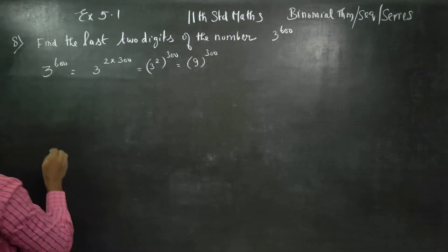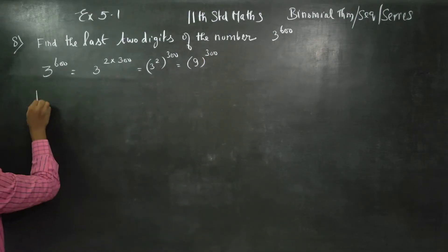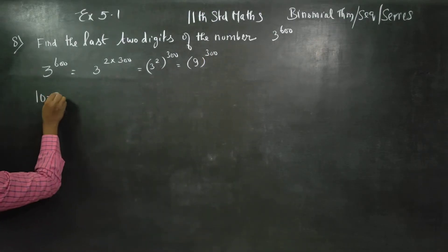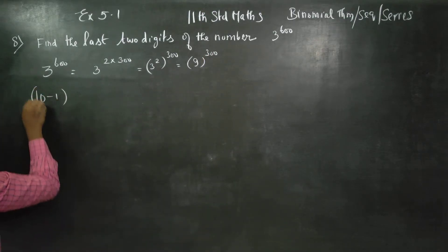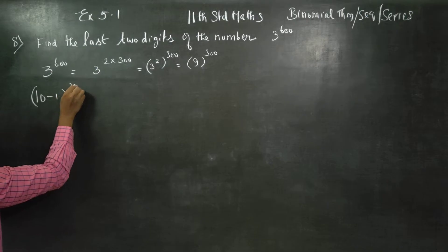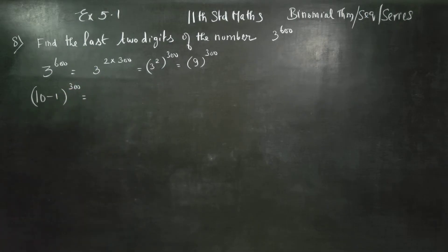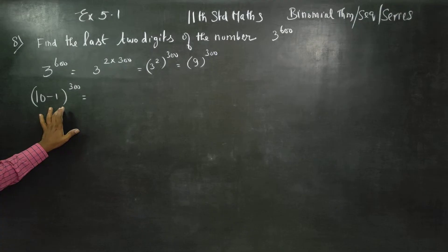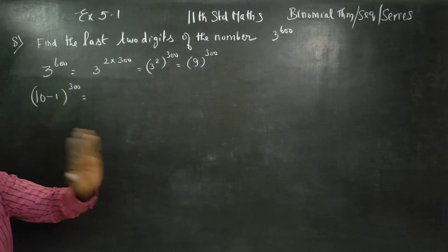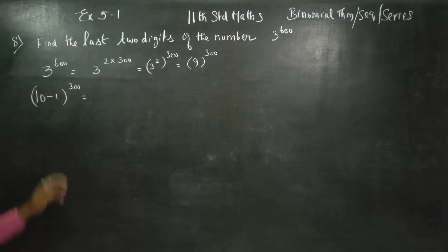9 can actually be written as 10 minus 1, whole power 300. Now we apply the binomial theorem to expand this expression.